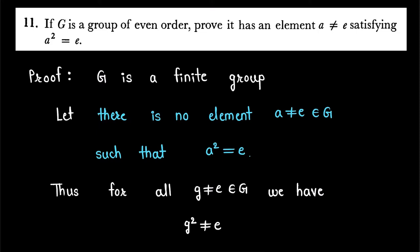Hello friends, in this video I am going to solve an exercise question from the book Topics in Algebra. The question is: If G is a group of even order, prove it has an element a ≠ e satisfying a² = e.